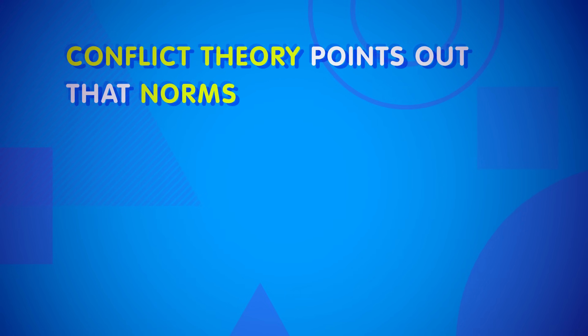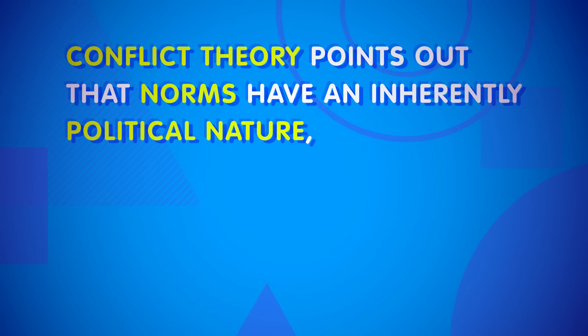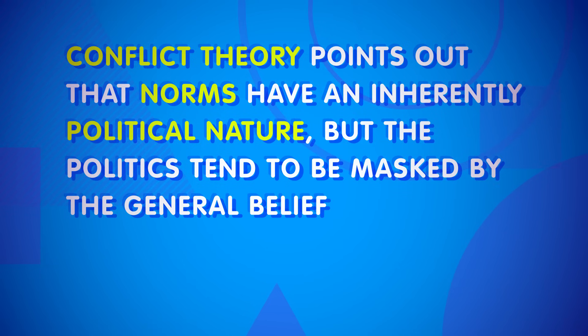Conflict theory points out that norms have an inherently political nature, but the politics tend to be masked by the general belief that if something is normative, it must be right and good. So while we may take issue with how a law is applied, we much more rarely ask whether the laws themselves are just or not. Conflict theorists see these explanations at work wherever the inequality of social power can be found – across gender, among races, and between groups of different socioeconomic status. Ultimately, structural functionalism, symbolic interactionism, and conflict theory all give us useful tools for understanding deviance, and we'll be making use of all three next week when we look specifically at crime.